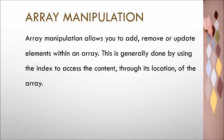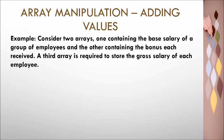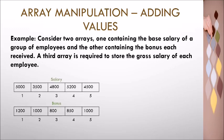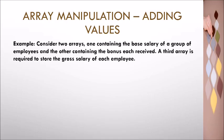Example 1 — Array Manipulation: Adding Values. This example indicates that there are two arrays. The first array stores the base salary of a group of employees, and the second contains the bonus each employee is expected to receive. A third array is required to store the gross salary of each employee. The problem requires adding items found in the salary and bonus arrays to generate the gross salary.